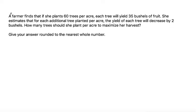This problem says a farmer finds that if she plants 60 trees per acre, each tree will yield 35 bushels of fruit. She estimates that for each additional tree planted per acre, the yield of each tree will decrease by two bushels. How many trees should she plant per acre to maximize her harvest? Give your answer rounded to the nearest whole number.